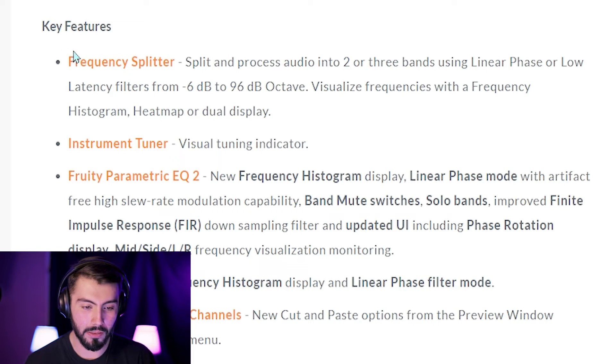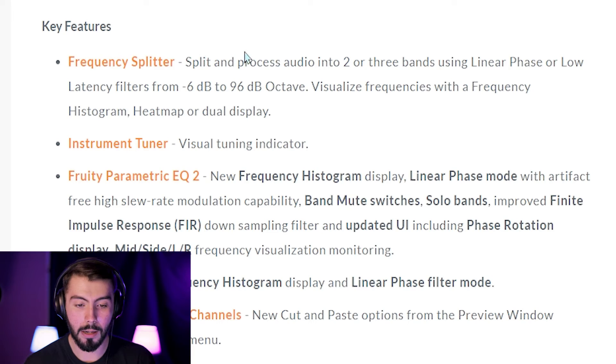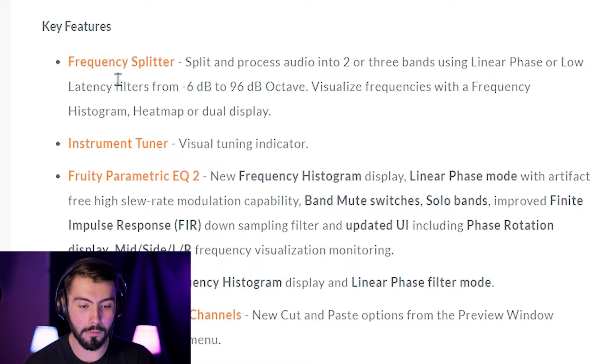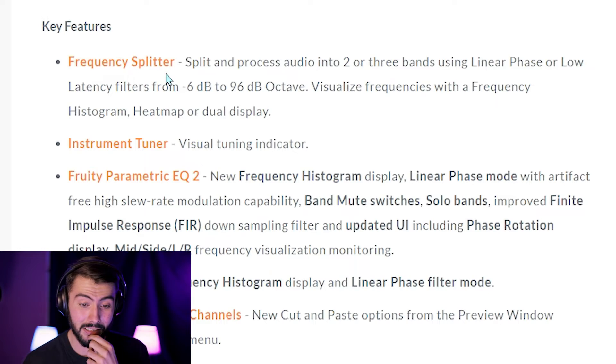Right off the bat, we've got the main thing that I was excited about for this update — it's going to be the Frequency Splitter, but we will go into this a little bit later on in the video with how it would actually work with your production. This is a new stock plugin inside of FL Studio. It can split and process audio into two or three bands using linear phase or low latency filters from minus 6 dB to 96 dB per octave. We're going to see exactly what that means once we dive into that a little bit later.